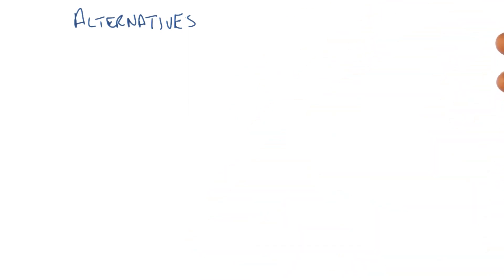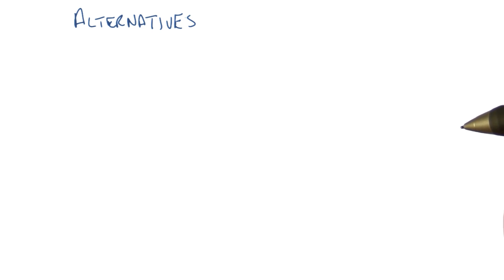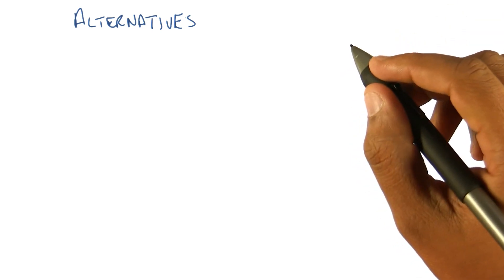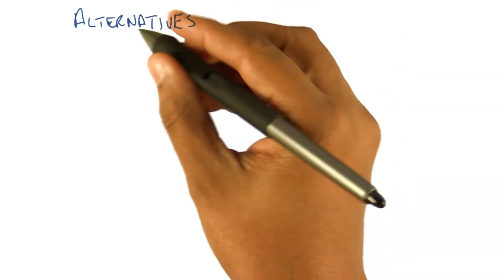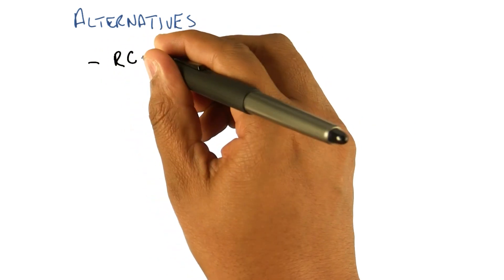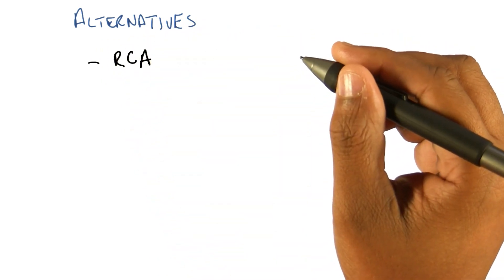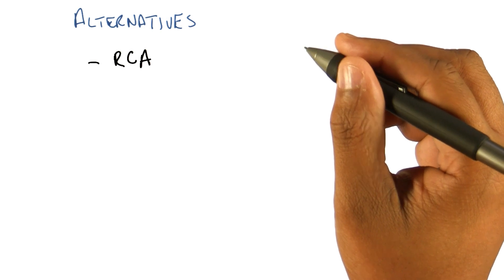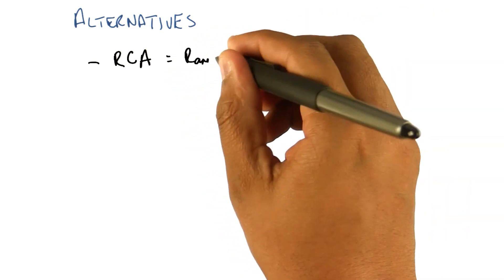I'm going to briefly describe two other alternatives to give you a notion of the space. The first one is kind of irritating, but I feel obligated to share it with you. It's got many different names, but I'm going to call it RCA just because I like the symmetry. RCA stands for random components analysis.